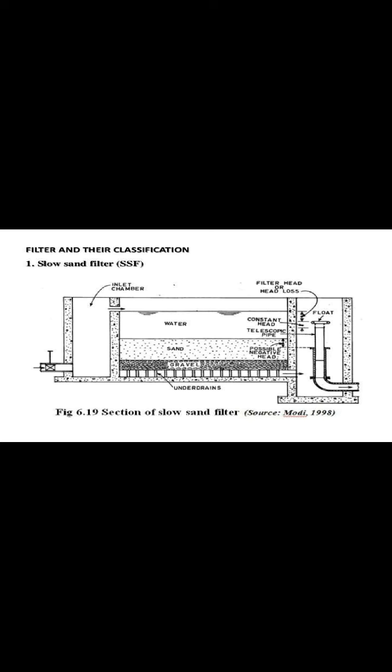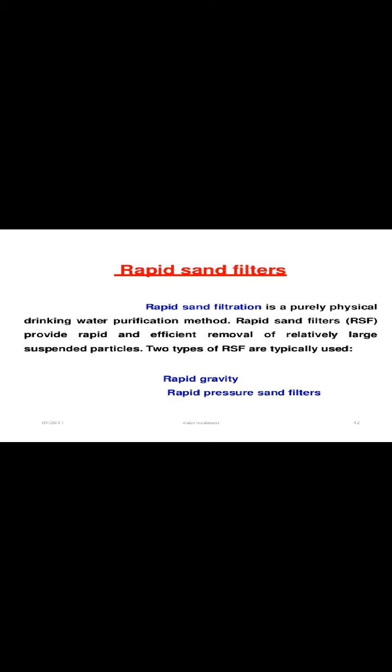The slow sand filter consists of a bed of soil — water is transferred through strata of soil and the upper layer of sand. The filtration process is carried out and then the filtered water exits through the outlet.